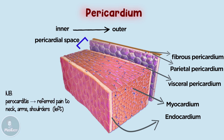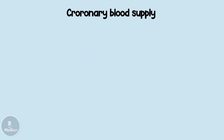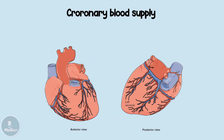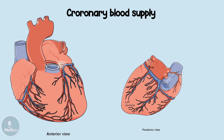Pericarditis causes referred pain to the neck, arms, and one or both shoulders, mainly the left one. The coronary arteries are the first branches of the aorta. There are two main branches: the left and right coronary arteries. At the bifurcation of the left coronary, two branches arise: the left anterior descending and the left circumflex.